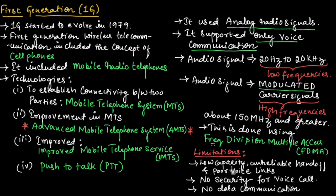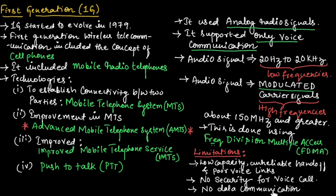There are a few limitations in first generation: it had low capacity and unreliable handoff. Handoff is the technique used when a user moves from one cell to another and the call is transferred. Here, hard handoff was possible but soft handoff was not. It also had poor voice links, no security for voice calls — meaning third parties could listen to communication — and no data communication.